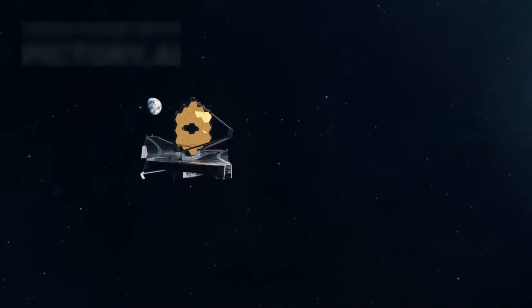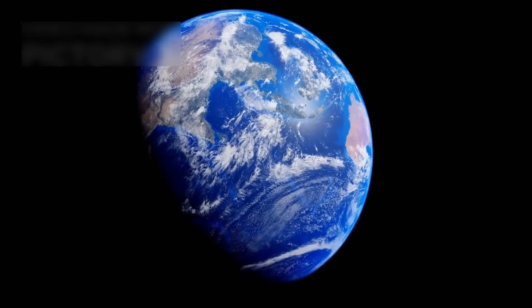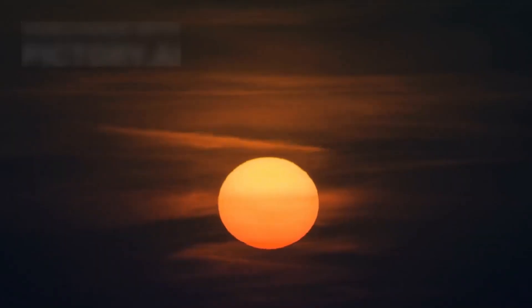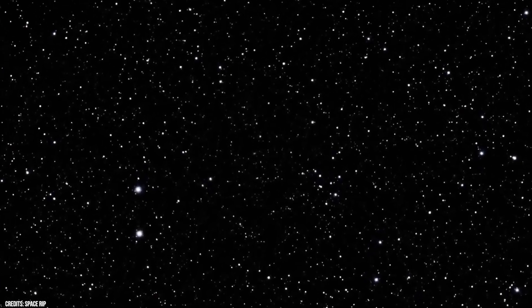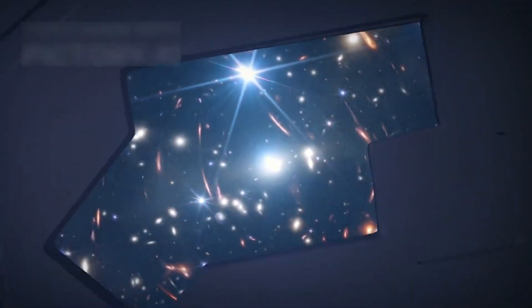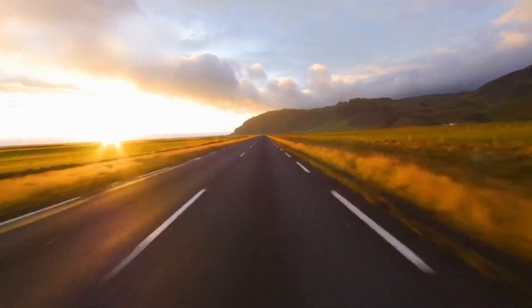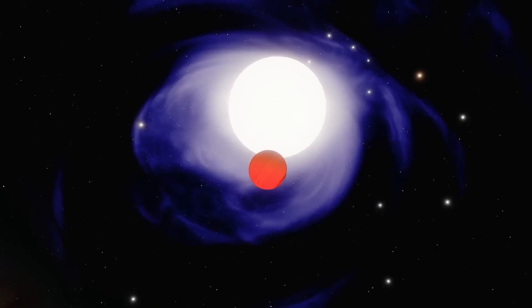The vastness of the universe is truly mind-boggling. The Sun, that bright fiery orb that lights up our days and warms our planet, is actually quite far away from us, sitting at a distance of about 149.6 million kilometers or 92.9 million miles. To make such a vast expanse easier to understand, scientists created a unit of measurement called an astronomical unit (AU). One AU is roughly equal to 149,598,000 kilometers or 92,955,187 miles.